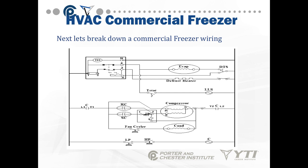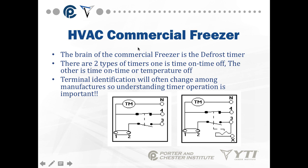This is a commercial freezer wiring diagram. It's a little bit different because we do not want ice to build up and cause problems on the evaporator fan or evaporator, so we have to have defrost up here on the left-hand side. We use a defrost time control. There are two types of timers: one is time-on, time-off; the other is time-on and temperature-off. The one on the left is time-and-time; the one on the right is time-and-temperature. Notice the X terminal.